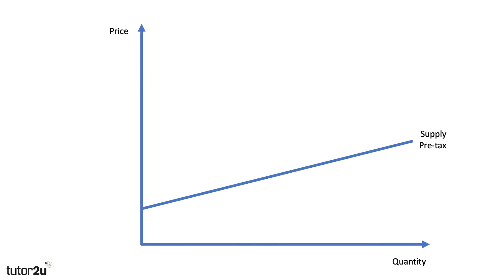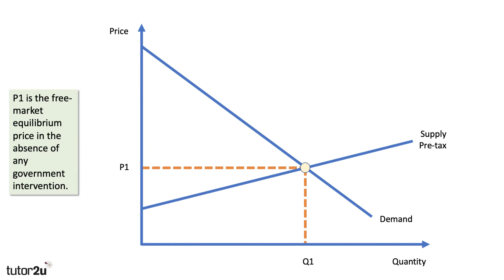Here's the initial supply curve before the tax — it's a fairly elastic, upward-sloping supply curve. Here's our demand curve for the product, the private benefit curve showing how much consumers are willing and able to pay. In a free market there would be an equilibrium price of P1 and quantity Q1 — that's the price and quantity that would happen in equilibrium in the absence of any government intervention.